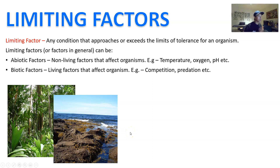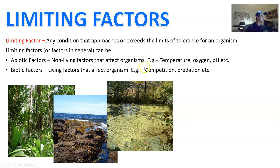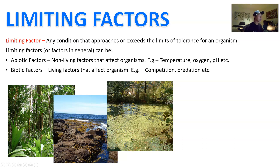In the intertidal zone, the limiting factor could be the tides themselves. At low tide all of this gets exposed and organisms are exposed to heat, and the animals can desiccate. However, when it's high tide, the whole thing's underwater and you have a different set of limiting factors. In a stagnant pond, oxygen level might be a limiting factor because the organisms living there don't have a lot of fresh water coming in to cycle oxygen in and out.